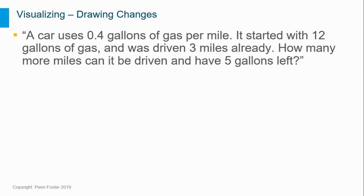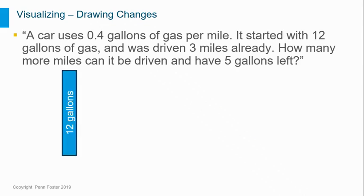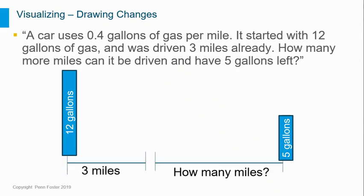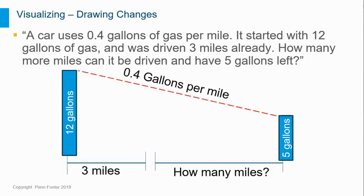A problem like this one contains change. A car uses 0.4 gallons of gas per mile. It started with 12 gallons of gas and was driven 3 miles already. How many more miles can it be driven and have 5 gallons of gas left? Our diagram should represent all of the important information: the starting gasoline, the ending gasoline, and the miles in between. The rate at which the gas is lost per mile is going to be the key to solving it.